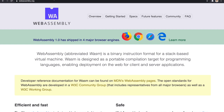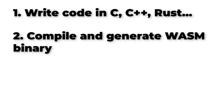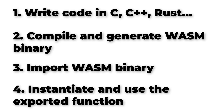Now that you understand what WebAssembly is and why it is so advantageous, here is how to use it. The simplest way is to write your code in C, C++ or Rust. The next step is to compile it and generate a WASM binary. Then import the WASM module into JavaScript. Finally, instantiate the WASM module and use the exported function.